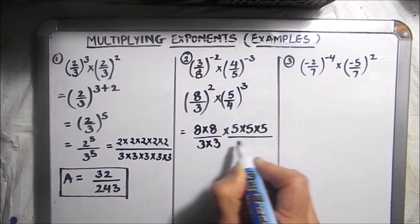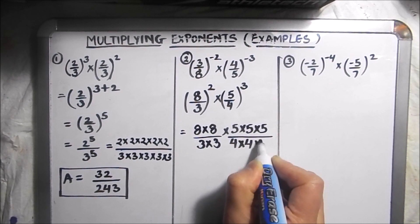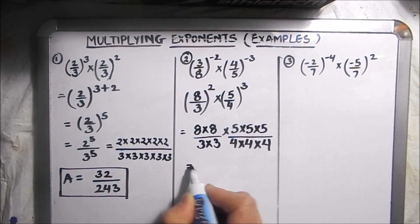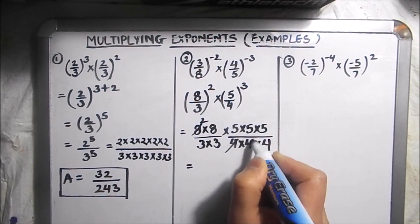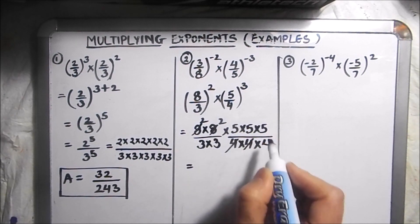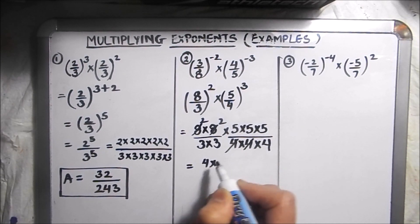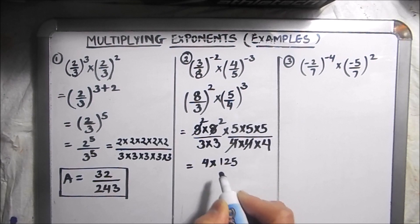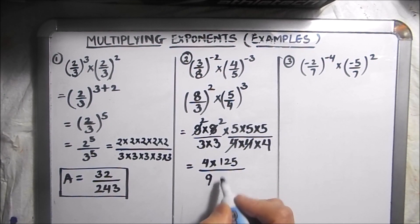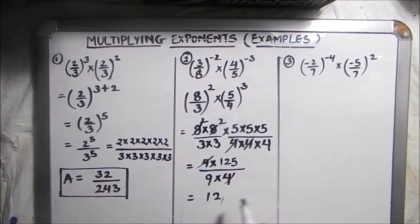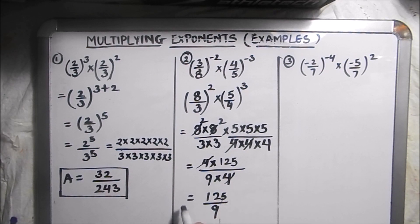This becomes 8 times 8 over 3 times 3, times 5 times 5 times 5 over 4 times 4 times 4. We then reduce: 4 times 4 cancels, giving us 4 times 125 over 9 times 4, so the 4s cancel. The final answer is 125 over 9.